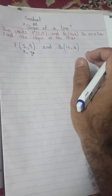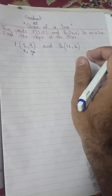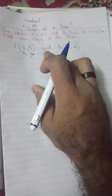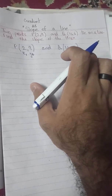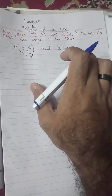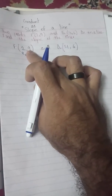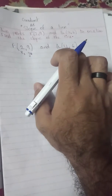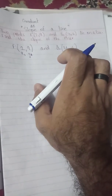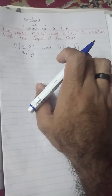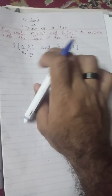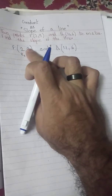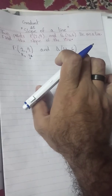The question gives us two coordinates. The first one is P, which is (2, 9), and the second one is Q, which is (4, 6). These are the X and Y values — the abscissa and ordinate — of my first and second points. I will write those two points: P is (2, 9) and Q is (4, 6).